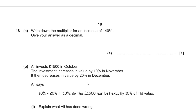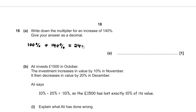Question 18, part A. The multiplier for an increase of 140% is found by adding 140 to the original 100%, giving 240%. As a decimal multiplier, that is 2.4.